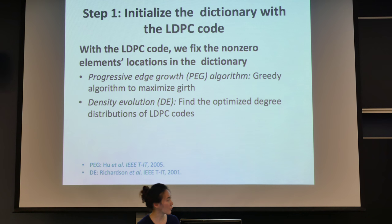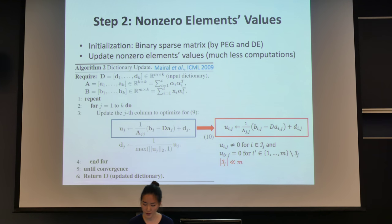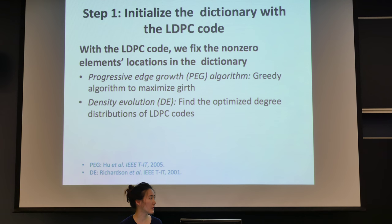In step one, we construct the LDPC code using progressive edge growth algorithm and density evolution. We fix the non-zero locations in the matrix.